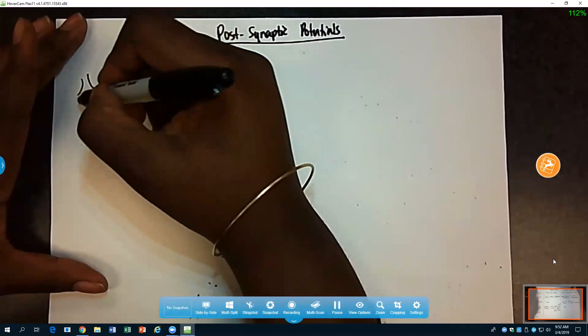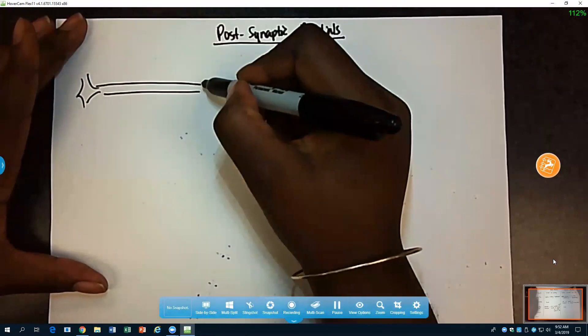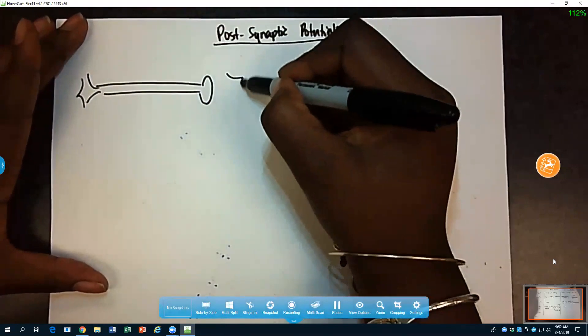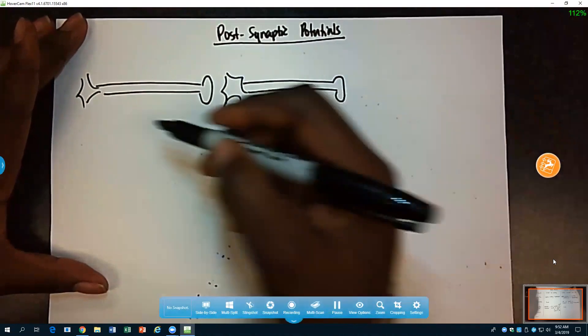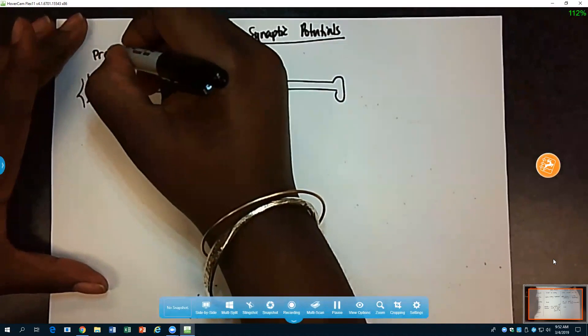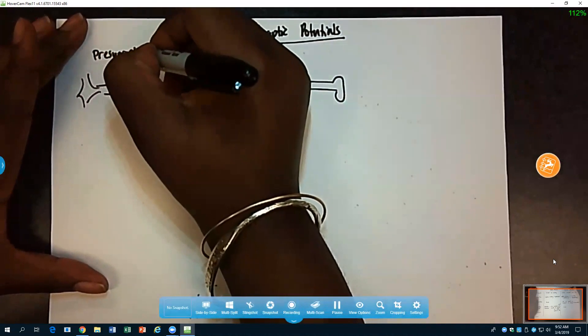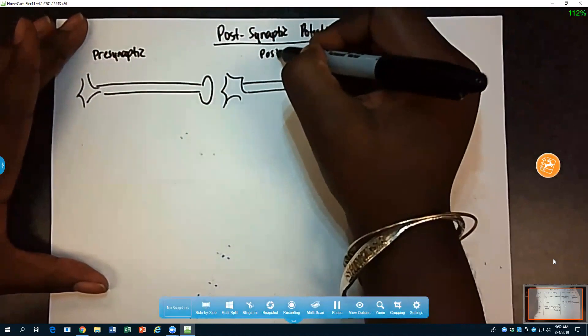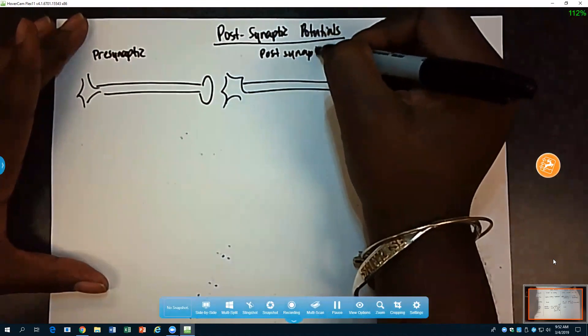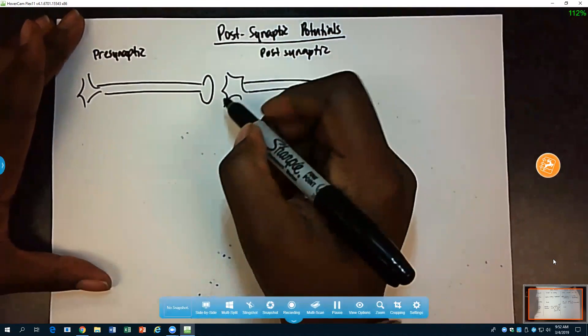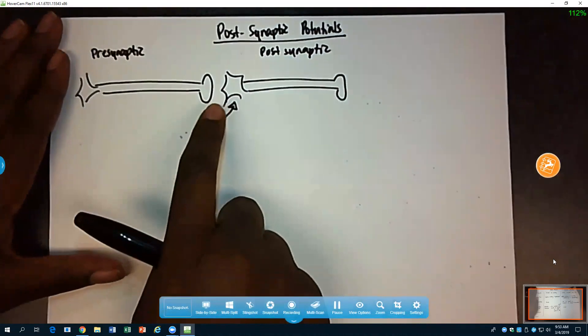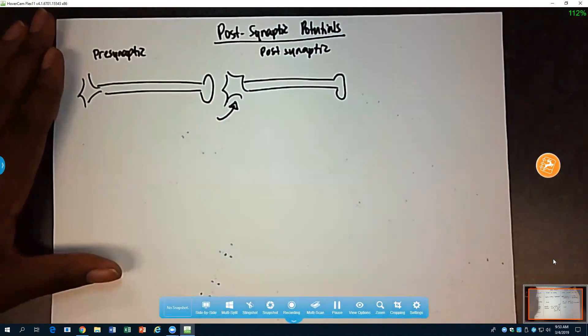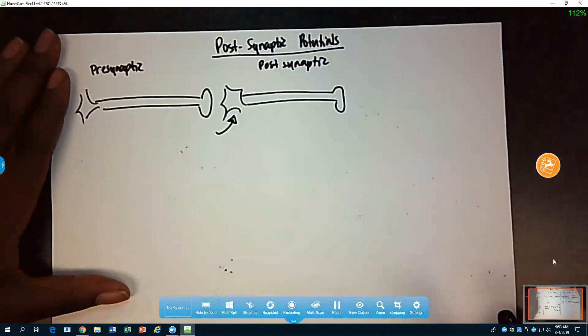We had one neuron, a second neuron here, this would be our pre-synaptic, this would be our post-synaptic. And so we're really speaking about the influence of the action potential when it gets to this post-synaptic neuron. These are your post-synaptic potentials.